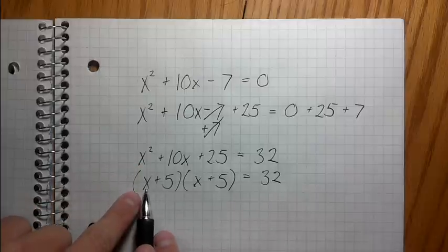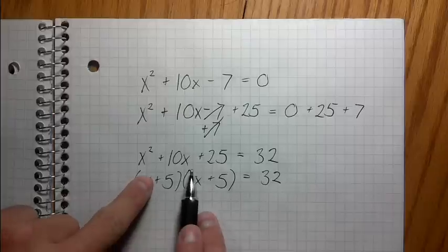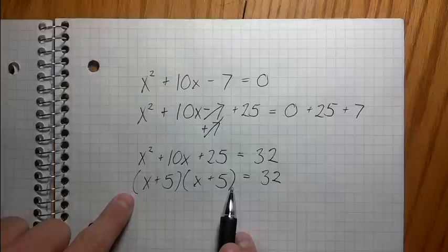By the way, this makes sense, doesn't it? See, x times x is x squared, I'm gonna get a 5x and a 5x, combined like terms, gonna get a 10x, and 5 times 5 is 25, right? So, if you know your factoring, this is very simple.